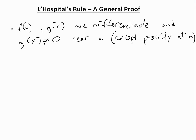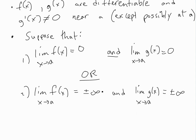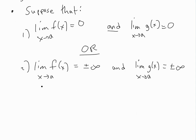The first condition for L'Hôpital's Rule is if you have functions f(x) and g(x), and they're both differentiable near a — except possibly at a — and also g(x) is not equal to 0 near a, except at a where it could equal 0. Now suppose you have either one of two cases: the limit of f(x) equals 0 as x approaches a, and the limit of g(x) approaches 0 as x approaches a, or they both approach plus or minus infinity. So if you divide them, you get 0 over 0, or plus or minus infinity over plus or minus infinity.